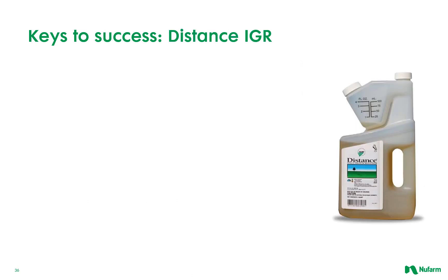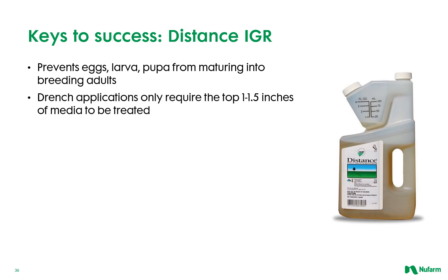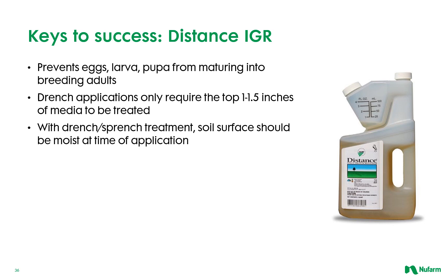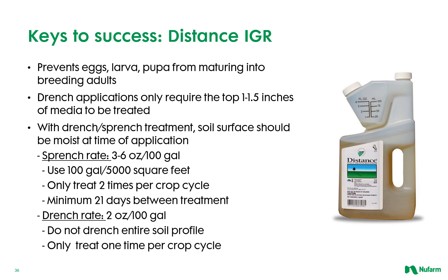Keys to success using Distance IGR, an Insect Growth Regulator which prevents eggs, larvae, and pupae from maturing into breeding adults: drench applications only require the top inch to inch and a half of the media to be treated. With the drench-sprench treatment, the soil surface should be moist at time of application. The drench rate is 3 to 6 ounces per 100 gallons, utilizing 100 gallons for about 5,000 square feet. Treatment can only occur two times per crop cycle, with a minimum of 21 days between treatments. The distance drench rate is 2 ounces per 100 gallons; again, it's not necessary to drench the entire soil profile, and at this rate, only one time per crop cycle.